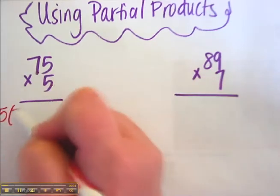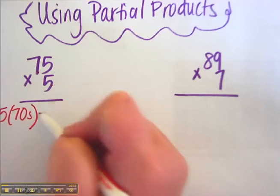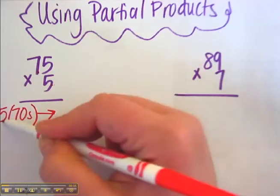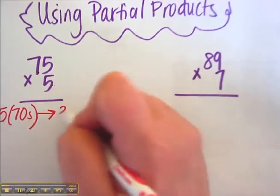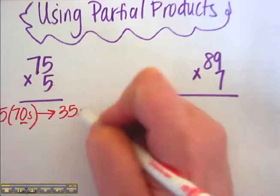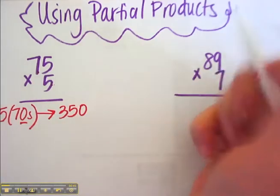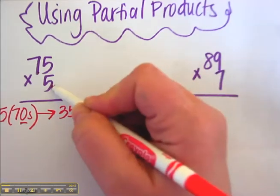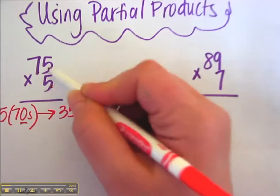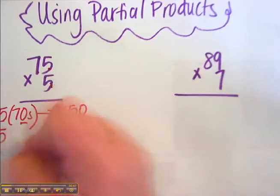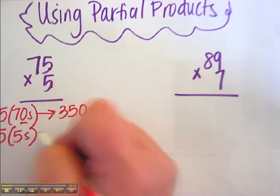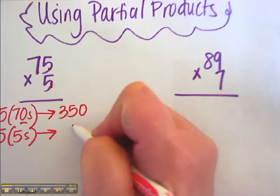So 5 70s arrow, well I know 5 times 7 is 35 and then we still have a 0 so it's actually 350. The next step is going to the ones place and looking at that and that is 5 fives. 5 times 5 is 25.